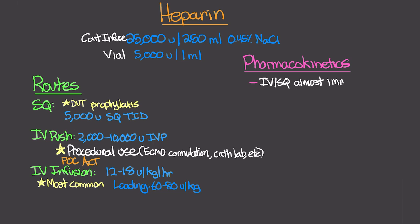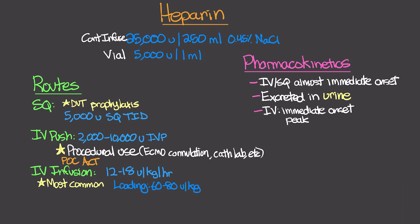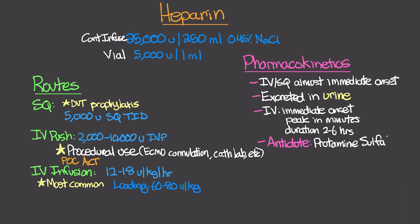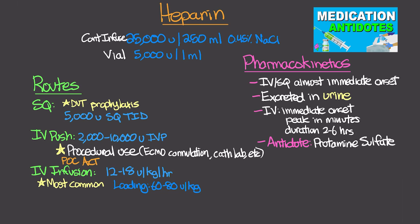Whether given IV or subcutaneously, heparin has an almost immediate onset of action. It is excreted in the urine, so renal function is important. For IV administration, onset is immediate, peak is within a couple of minutes, and duration lasts about two to six hours, or for the length of the infusion. The antidote for heparin is protamine sulfate — important to know and covered in a linked lesson on antidotes.